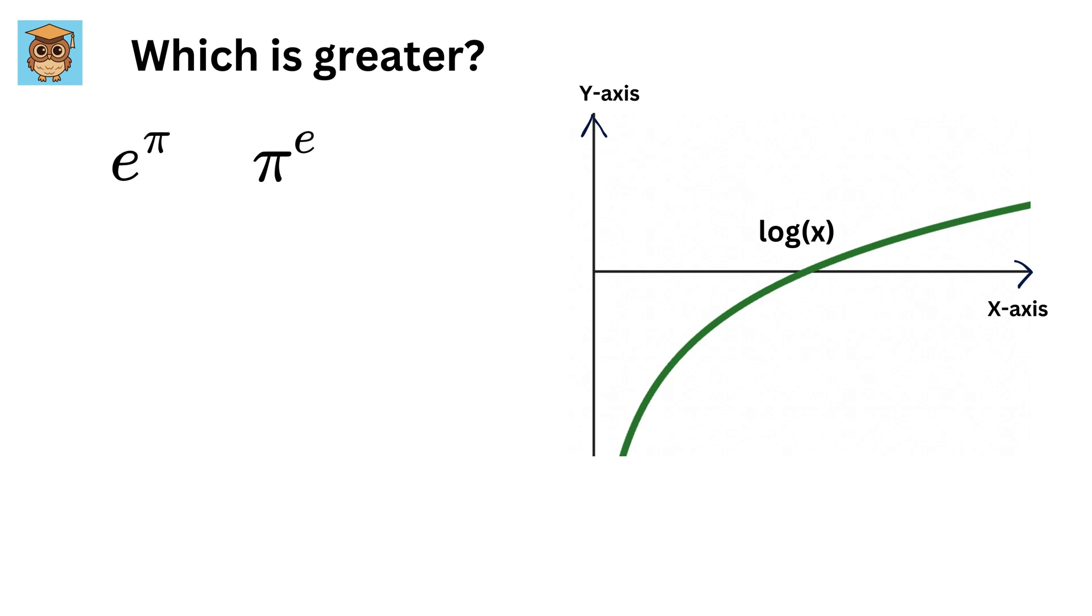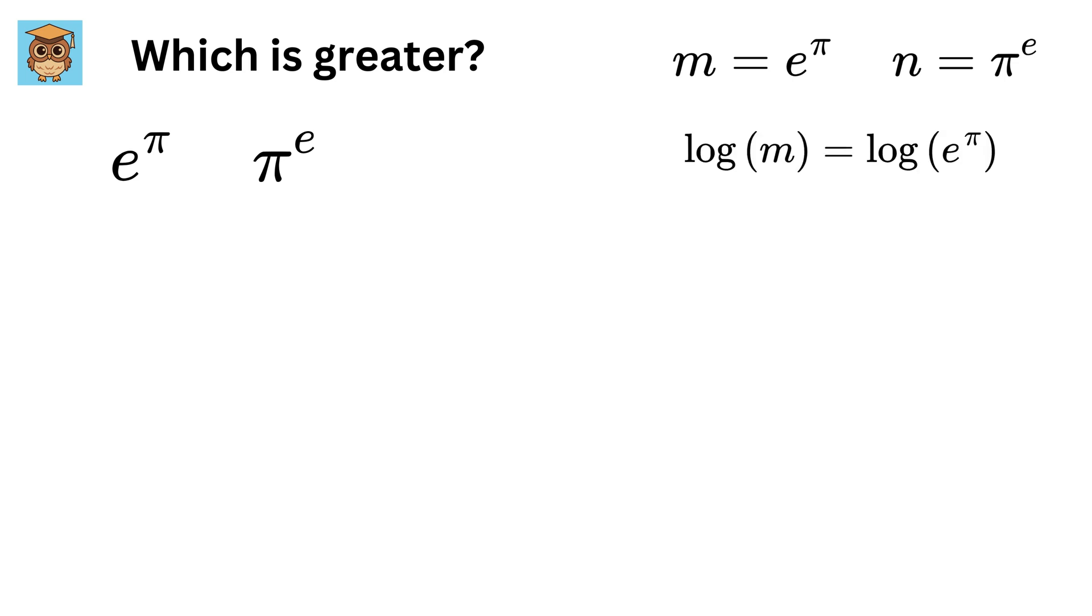This means we can take the natural log of two expressions and compare the size of the resulting values. Let m equal e raised to π and n equal π raised to e. Therefore, the log of m will be...